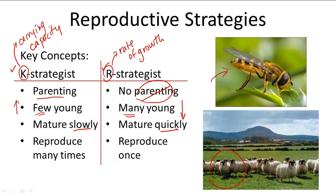K-strategists reproduce many times, whereas R-strategists reproduce once. R-strategists will reproduce all their offspring in one fell swoop — this makes sense because they don't have to parent their offspring, so they can reproduce all of them at once and send them off into the world. But K-strategists have to give individual attention to their offspring, so they can only have a few offspring at a time, slowly parenting them before sending them off. They reproduce many times, but only a few offspring each time. Both R- and K-strategists have developed under different life history conditions and fit the needs of their organisms.